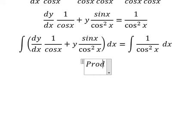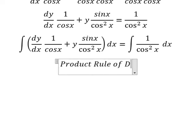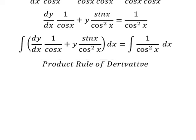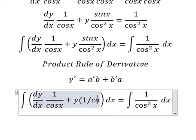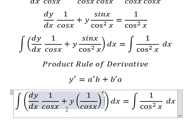We can apply the product rule of derivative. We know that the first derivative of y equals the first derivative of a multiplied by b plus the first derivative of b multiplied by a. This is the first derivative of a multiplied by b. This is the first derivative of b multiplied by a.